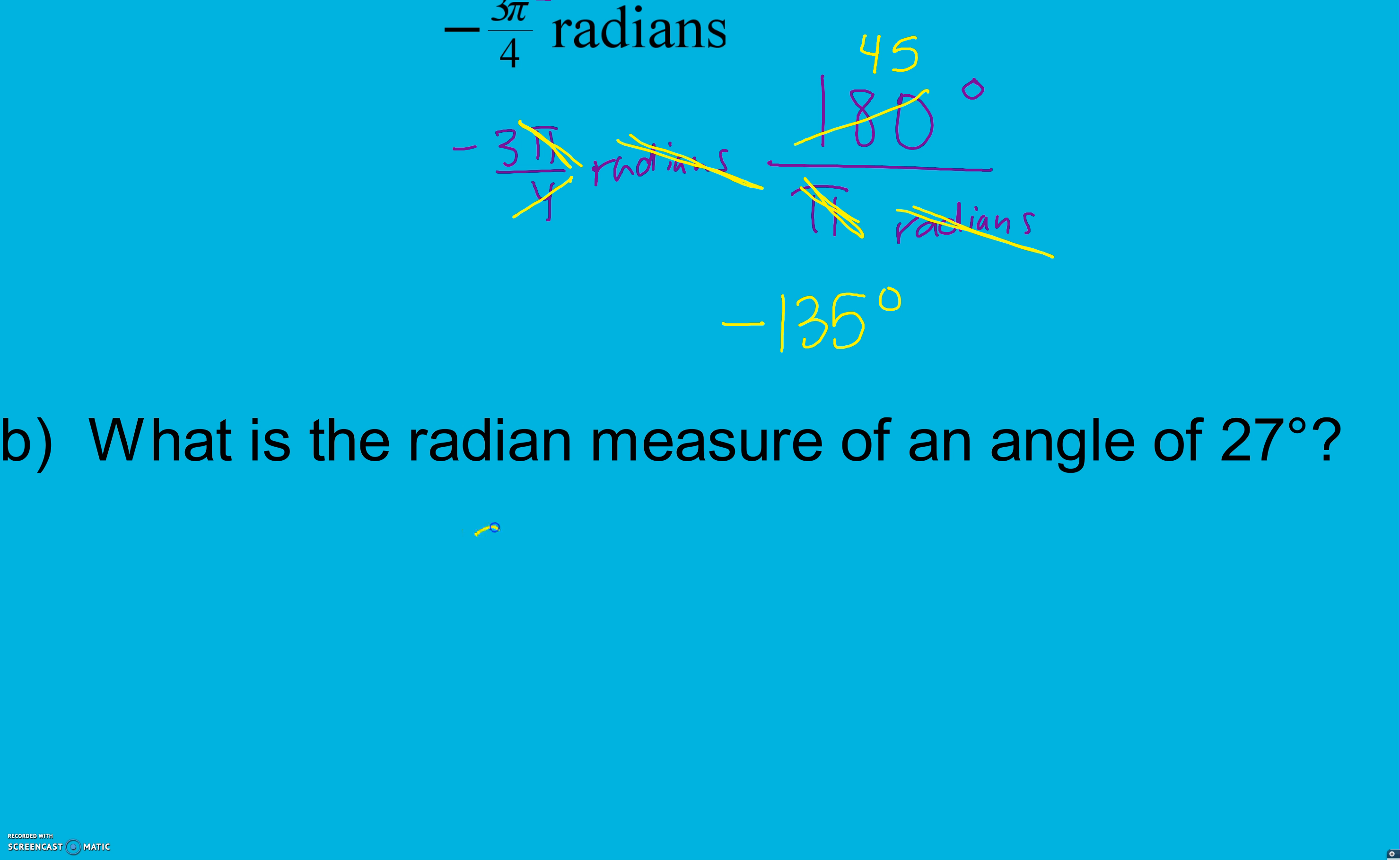What is the radian measure of an angle of 27 degrees? I'm starting with 27 degrees, so I have to put degrees on the bottom because those I need to cancel. I'm looking for radians, so radians has to go on the top. π radians and 180 degrees go together—they're each half circles. Degrees cancel. I'm going to have 27π over 180. I can simplify there by taking out at least a 9. I'm going to have 3π over 20 radians.